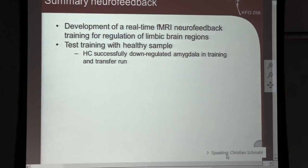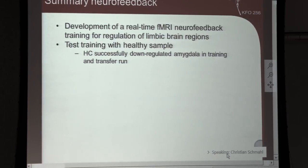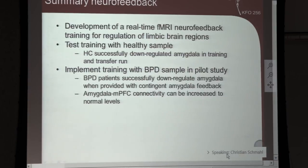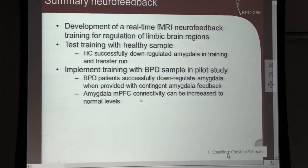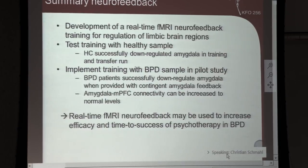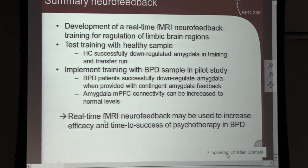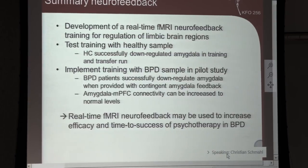In summary, we developed a real-time fMRI neurofeedback training. Healthy individuals were able to down-regulate the amygdala in training and transfer runs. Borderline patients successfully down-regulated the amygdala and increased amygdala-prefrontal connectivity to normal levels. We concluded that real-time fMRI neurofeedback may be used to increase efficacy and also the success of psychotherapy. The next step is a controlled multicenter trial in Germany.